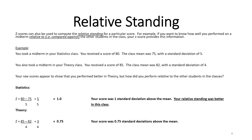In statistics, your score was one standard deviation above the mean. While in theory, your score was 0.75 standard deviations above the mean. So even though your raw score in theory looked better, your relative standing — your z-score — was actually better in statistics, where you had a 1.0 versus a 0.75 in your theory class.